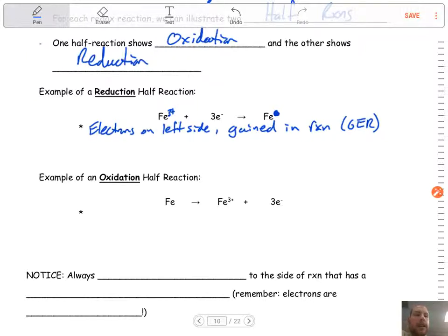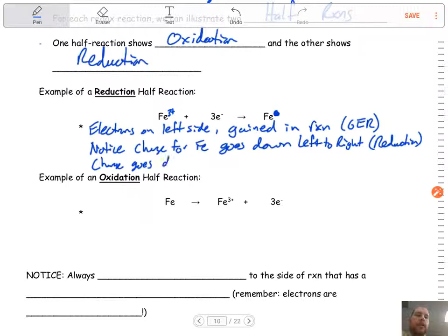There is a typo here - you need to change this because it doesn't make sense that we're gaining and we're reducing. Cross out the charge on the right side and put the 3+ there, because if we're gaining electrons, we need to be reducing our charge. Notice now with that correction, the charge for iron goes down left to right, which shows the reduction that's taking place. The charge decreases because iron gained those electrons.